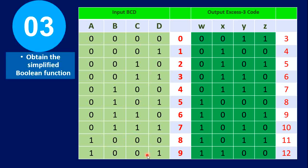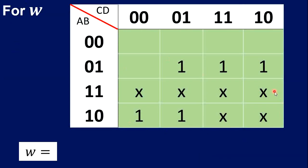Step number three: obtain the simplified Boolean function. Our outputs are W, X, Y, Z, so we have to obtain the Boolean function of each output. Let's start with W. Our concern is where W is one, and that is in five, six, seven, eight, and nine. Let's plot that into the Karnaugh map for W.